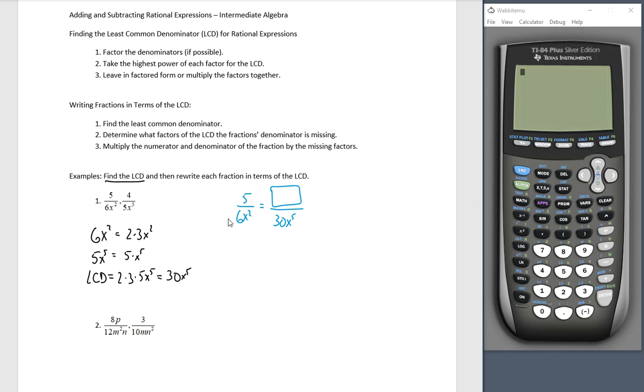Determine what factors of the LCD the fractions denominator is missing. So what do I multiply 6 by to get 30? Well, that's 5. What do I multiply x squared by to get x to the fifth? I need three more of them. So we're going to multiply both the numerator and denominator by that value because I have to multiply the denominator to get the common denominator. I have to multiply the numerator to keep it the same fraction. So 25x cubed is my numerator.